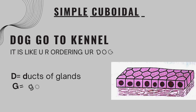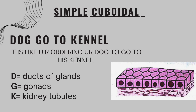Next we have simple cuboidal epithelium. The mnemonic is: order your dog to go to his kennel. Dog — D — signifies ducts of glands. Go — G — signifies gonads. And kennel — K — signifies kidney tubules. So D, G, K are the examples for simple cuboidal epithelium.